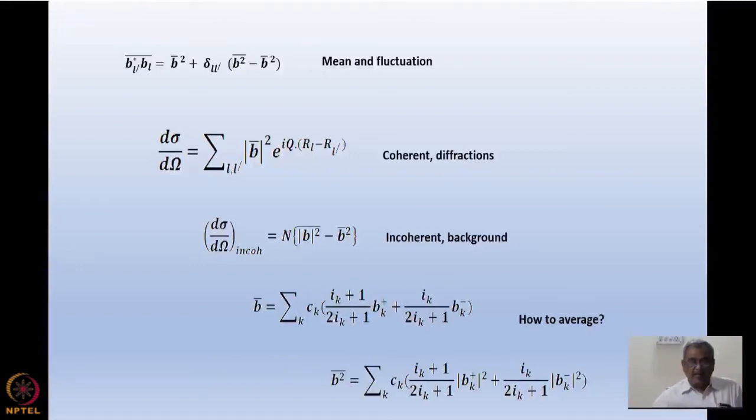When I write down the scattering cross-section in terms of these two, I get two parts. B_average squared times e^(iq·(R_L - R_L')), which is the coherent part causing diffraction. Another part is N into (B²_average - B_average²), which is an incoherent part with no angle dependence.